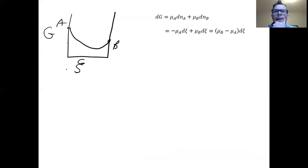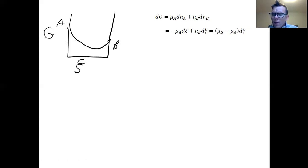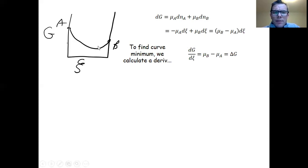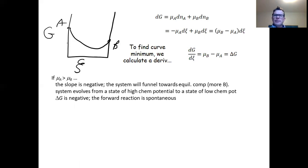Taking that definition and plugging it into the expression for the change in Gibbs energy — rather than expressing it in terms of nA and nB — I insert the extent of reaction dξ and factor things out. The minimum of the curve corresponds to the derivative dG/dξ. When I define that derivative, I get dG/dξ = μB − μA, and I want to convince you that this is in fact equal to delta G of the reaction.